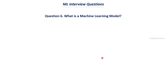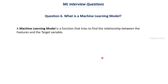The sixth question is: what is a machine learning model? This is a very important question. A machine learning model is a function that tries to find the relationship between the features and the target variable. A machine learning model will try to relate the features and the target. So what is meant by features and target?